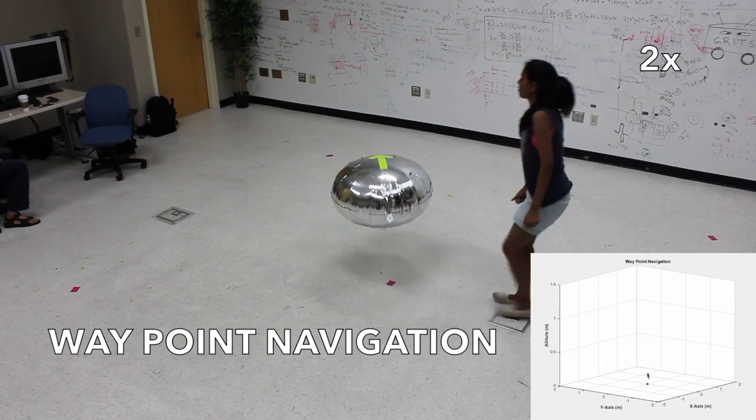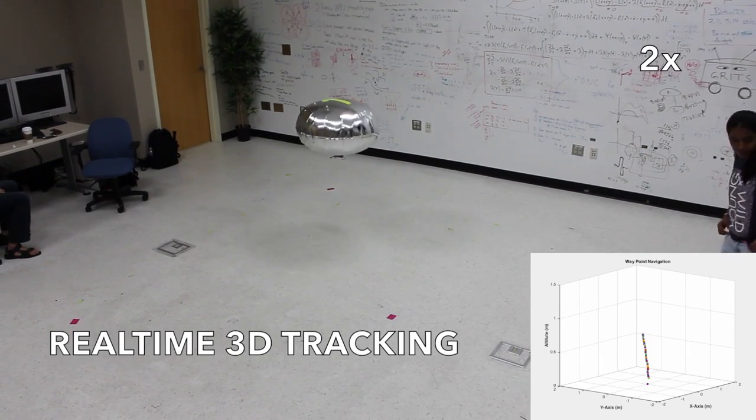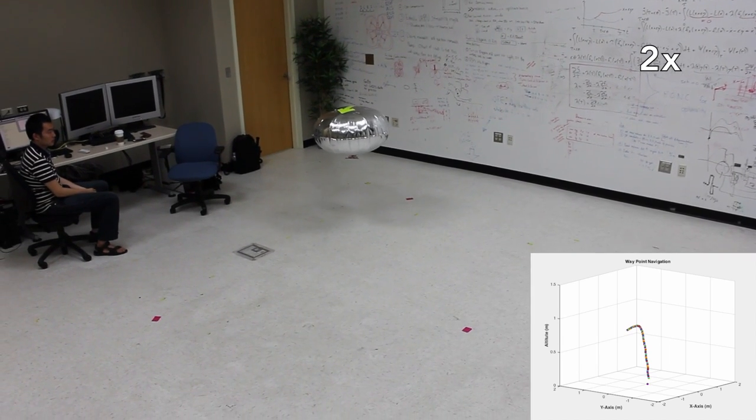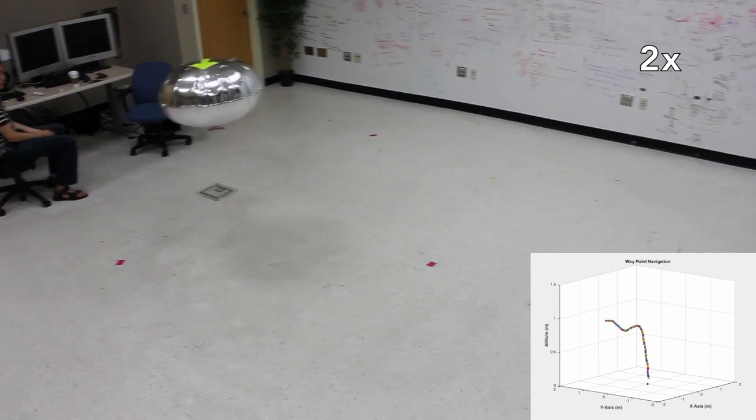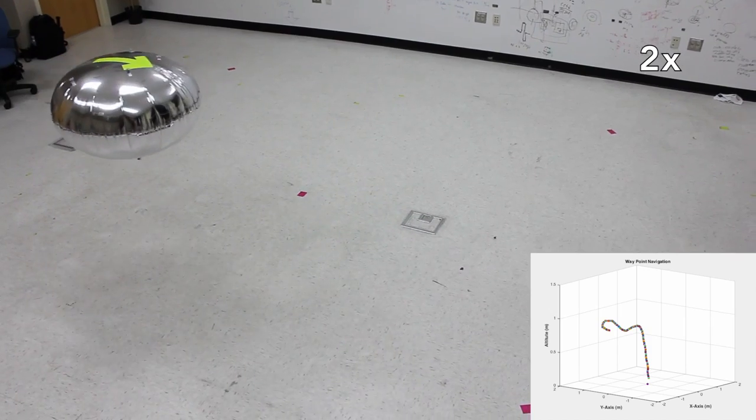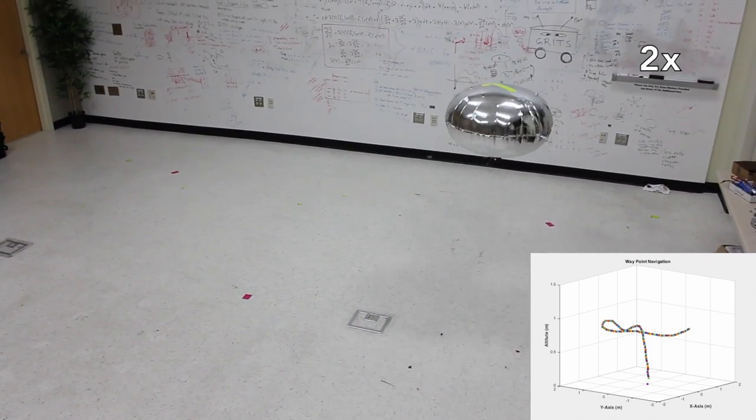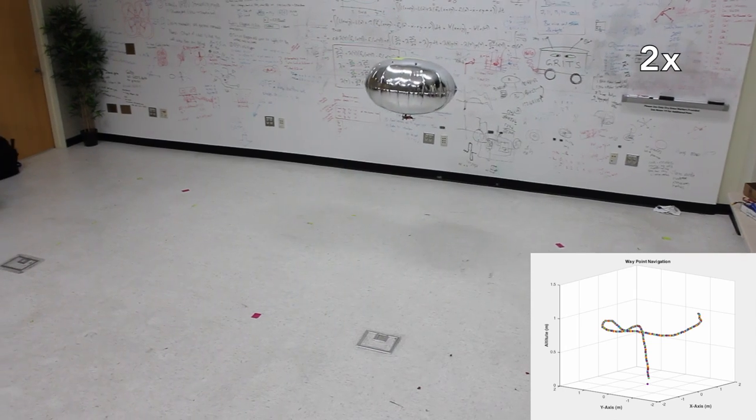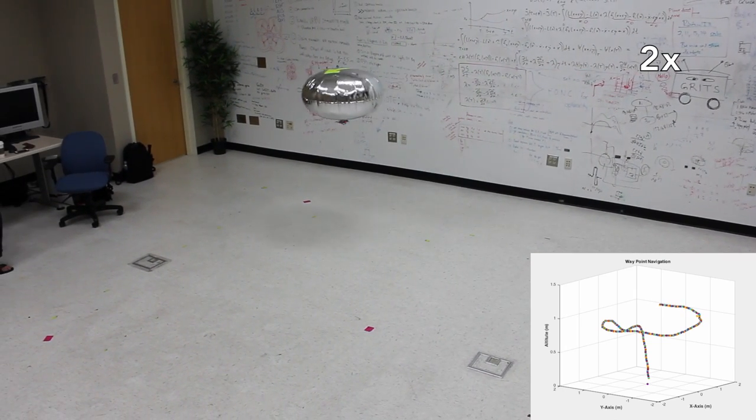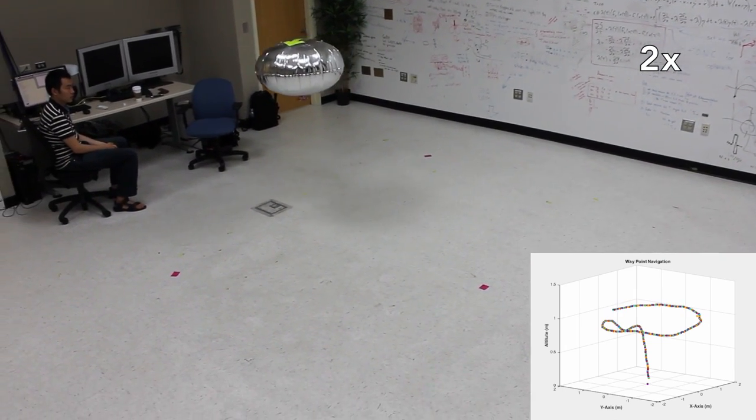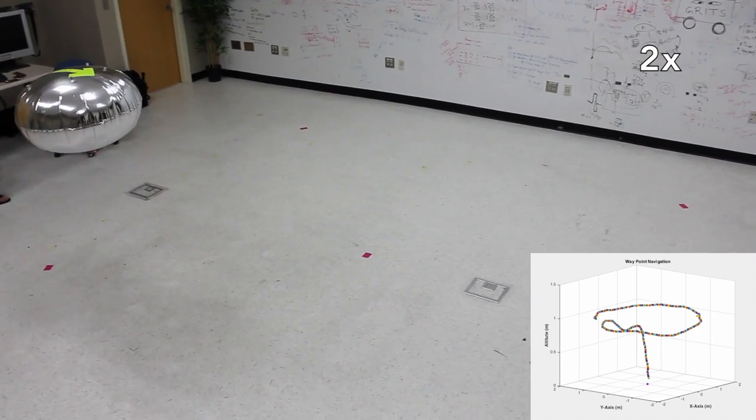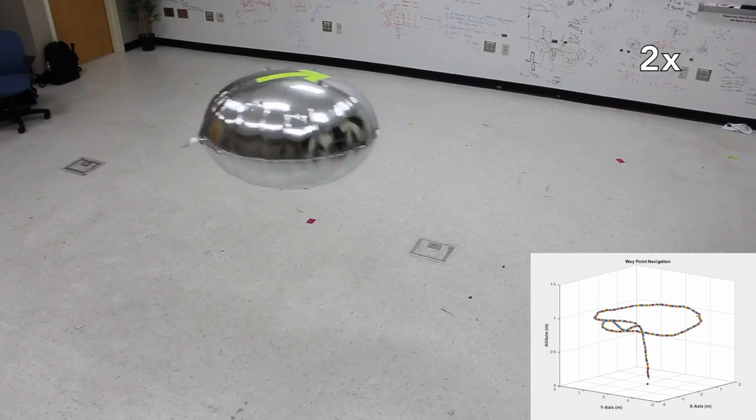When we design any source-seeking algorithm, the first assumption we make is that the robot or drone we are using is fully maneuverable. We want the robot to be able to go to any possible location on the search space which the algorithm decides as the next step. So we test the maneuverability of the blimp using waypoint control, in which the blimp is given some waypoints and has to travel to each of these waypoints in a pre-specified order.